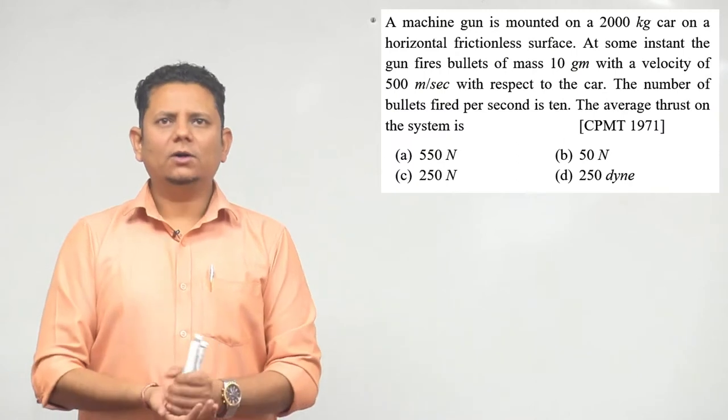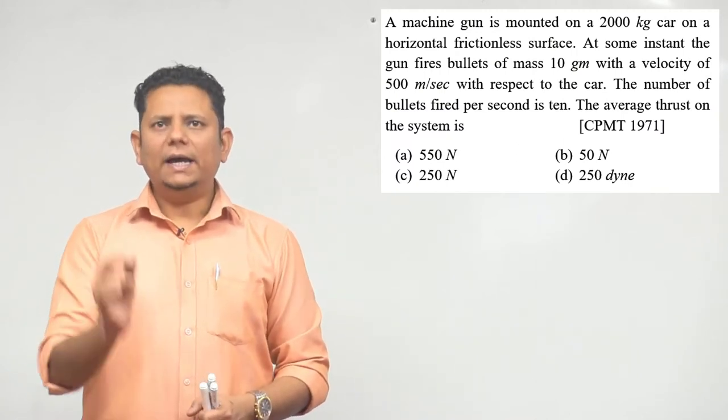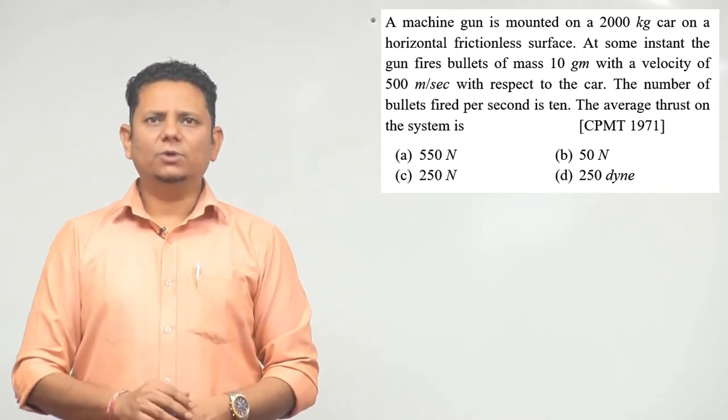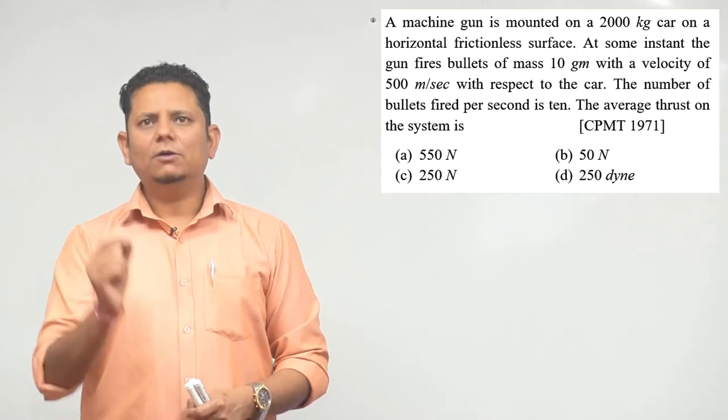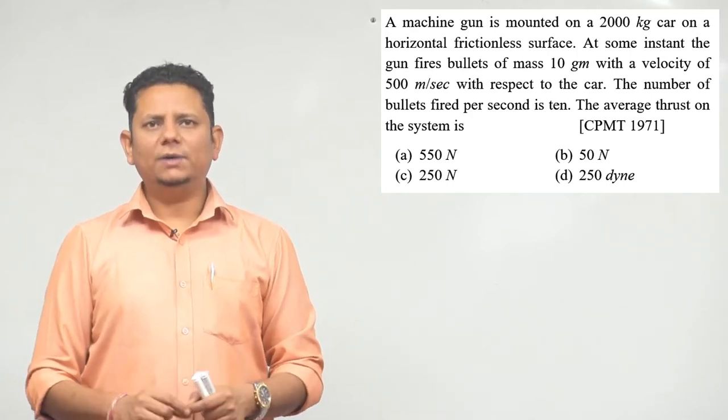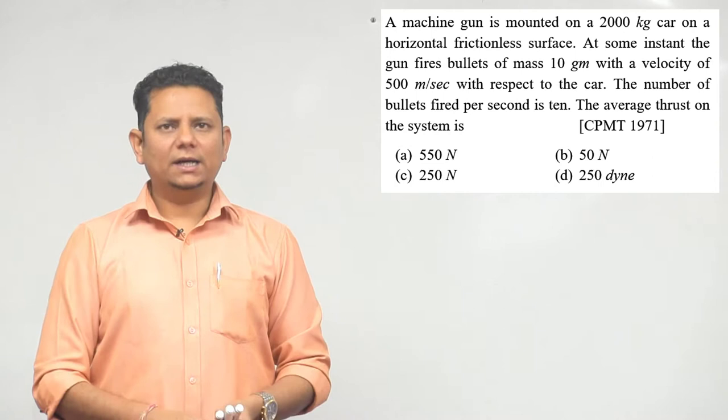Next question. A machine gun is mounted on a 2000 kilogram car on a horizontal frictionless surface. At some instance, the gun fires bullets of 10 gram each with a velocity of 500 meter per second with respect to the car.